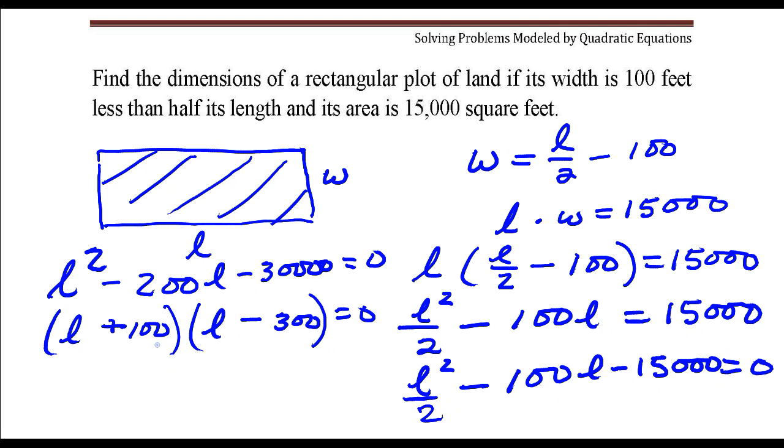Now we need to check this. 100 times negative 300, that's negative 30,000. And 100 plus negative 300, that is negative 200. So this is the correct factorization.